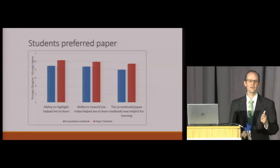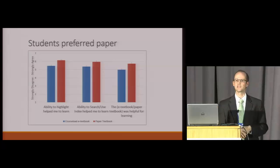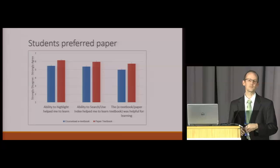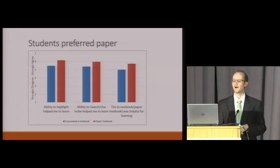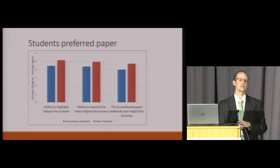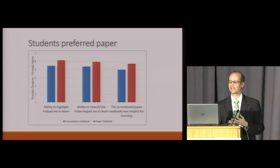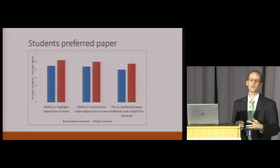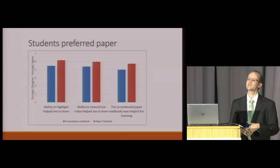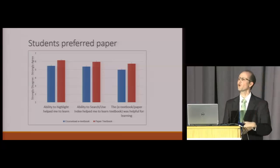We also found that students using the paper textbook reported reading more hours — and this difference was significant across the semester. At the end of the semester, students in the paper group were more likely to agree that the ability to highlight helped their learning, that using the index was more useful, and that overall the paper textbook was more useful. In general, students in the paper group used their textbook more and were more pleased with it.